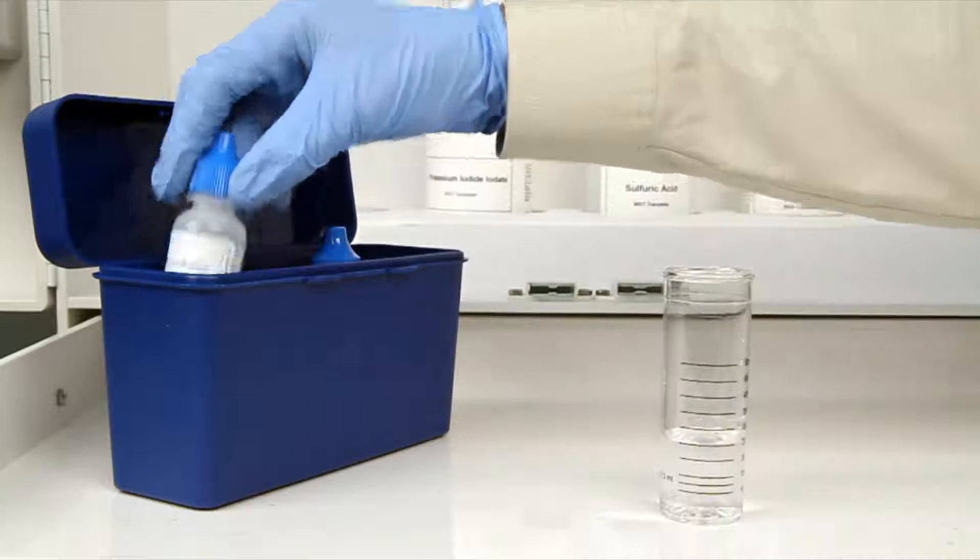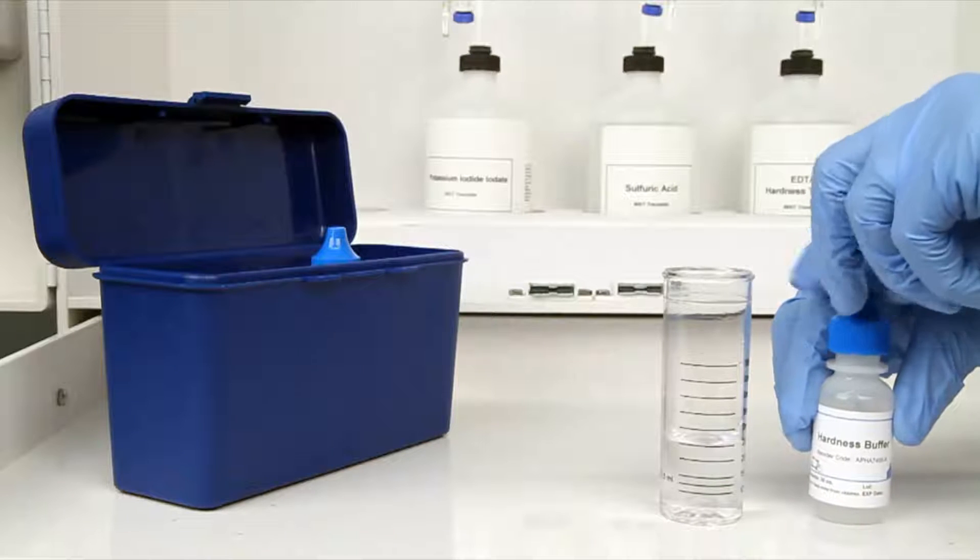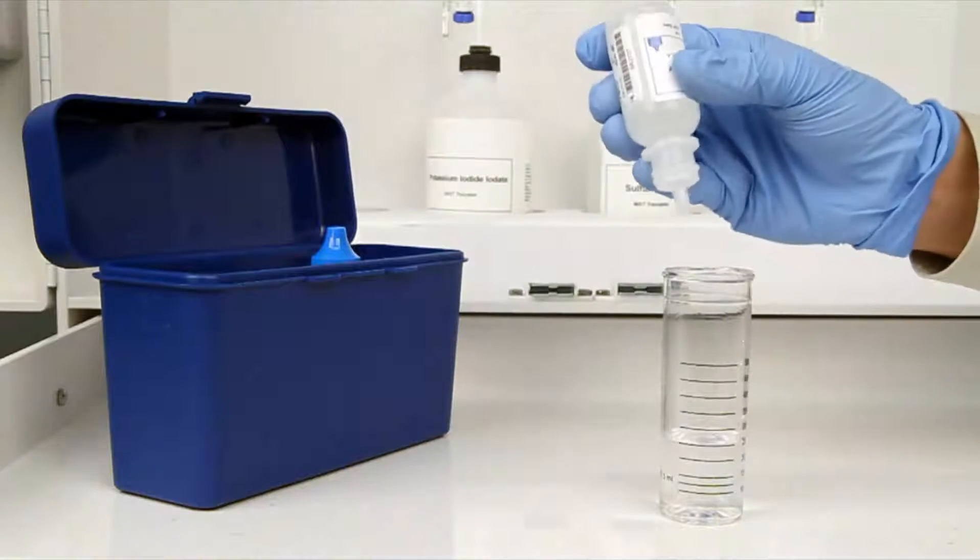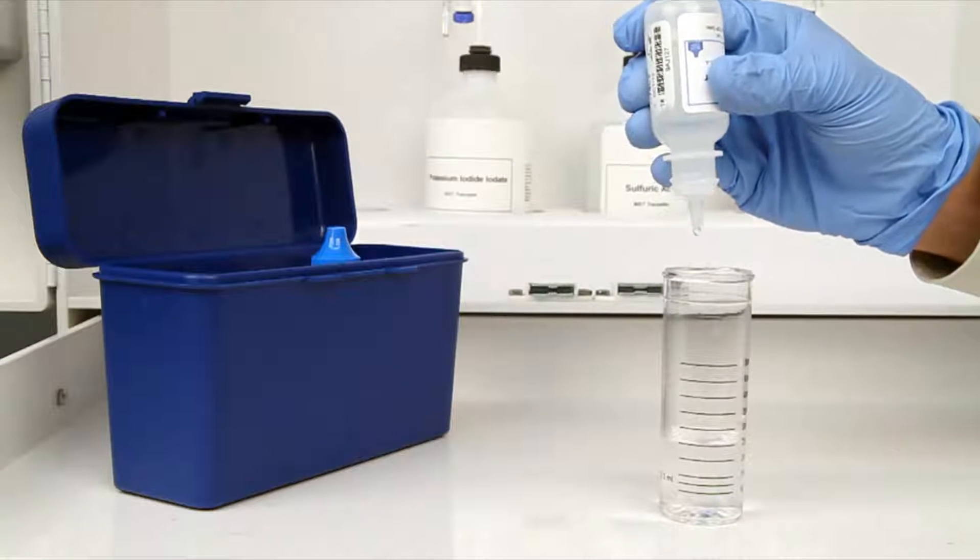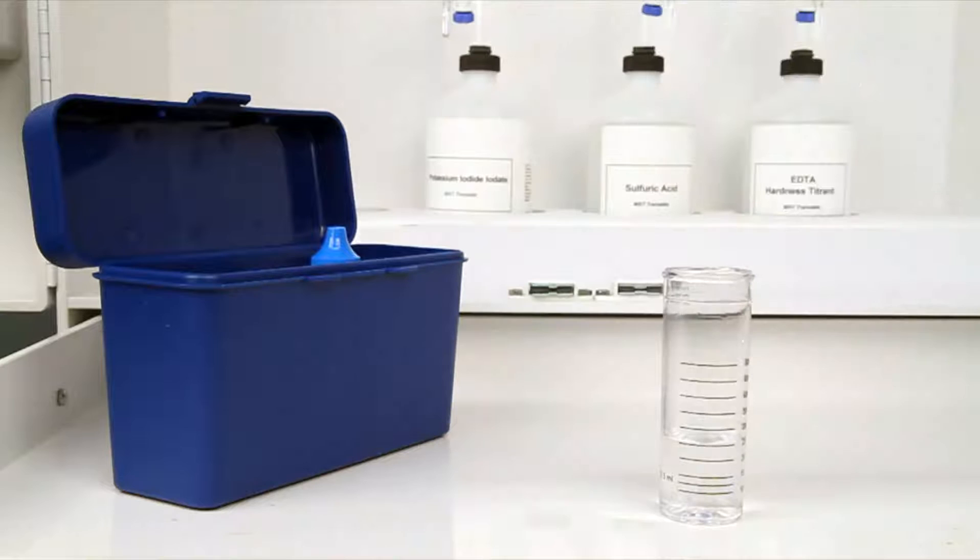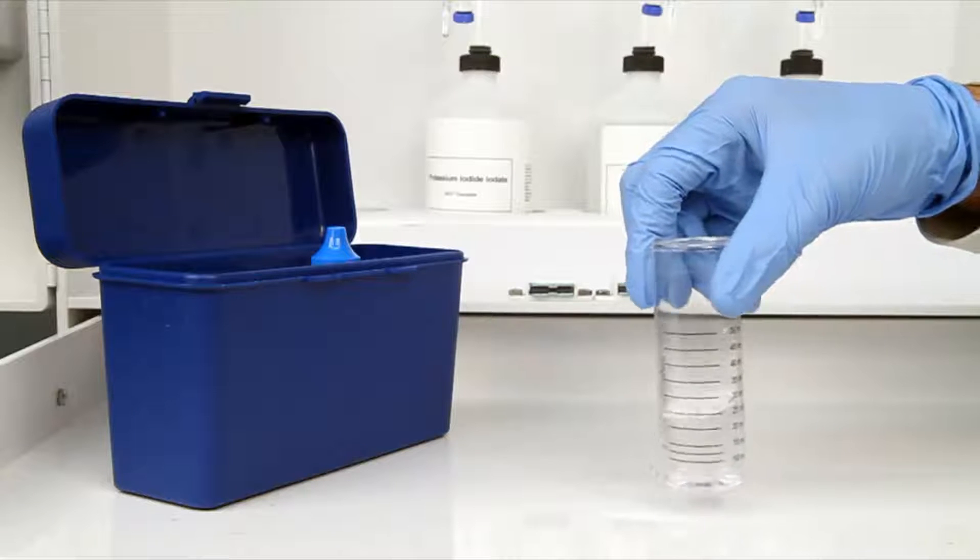The next step according to the Endpoint ID procedure is to add five drops of hardness buffer. The bottle contains a dropper tip, so it's important to hold the bottle vertically to get a consistent drop size. After the addition of each reagent, it's important to swirl the vial to make sure the reagents are properly mixed.